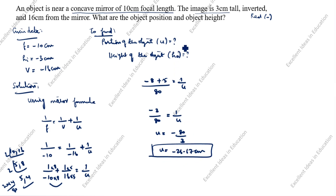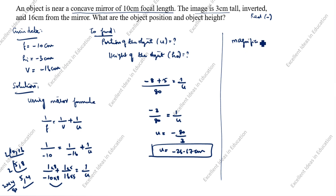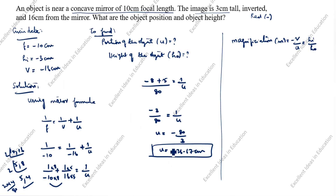Now we need to find the height of the object. The formula for magnification is: m = minus v/u = hi/ho. The v value and u value are already known, and hi value is given in the question.